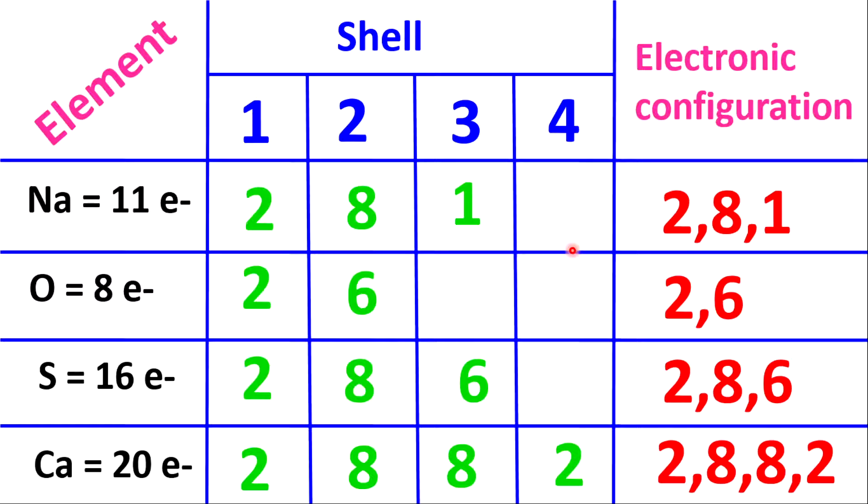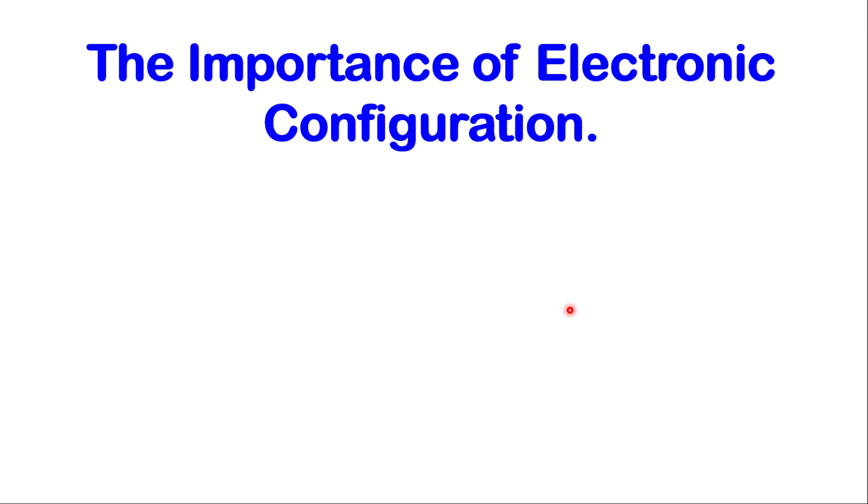Now you understand how to write electronic configuration. You can look in a periodic table for the number of electrons, which is the same thing as the atomic number or the proton number. Now let us look at some importance of electronic configuration. Why is this so important to note? You need to know this before you do a lot of topics within chemistry.